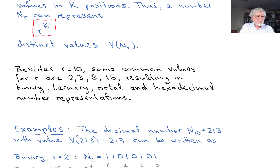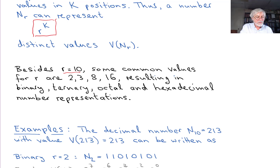Besides r=10 for decimal, some common values of r are 2, 3, 8, and 16. When r=2 it is called the binary number system. When r=3 it is called a ternary number system. When r=8, it is octal representation. And when r=16, it is called hexadecimal representation.